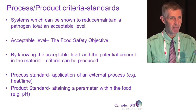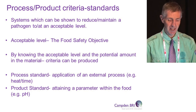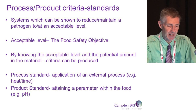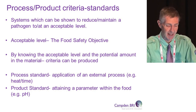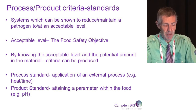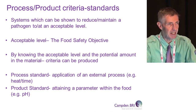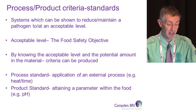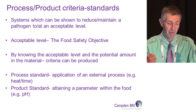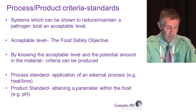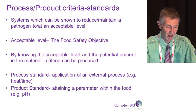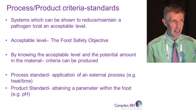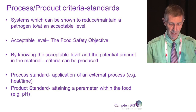Moving from criteria-based standards to process-type standards - this is another way to reduce levels of microorganisms in food products, and these are probably better than criteria-based standards. These are systems which can be shown to reduce or maintain a pathogen to an acceptable level in a food product. If you know the acceptable level - the food safety objective - and the potential level of the hazard in your food product, you can produce some form of criteria for the process you wish to use. A process standard might be the application of heat and time; a product standard might be attaining a particular pH or water activity.